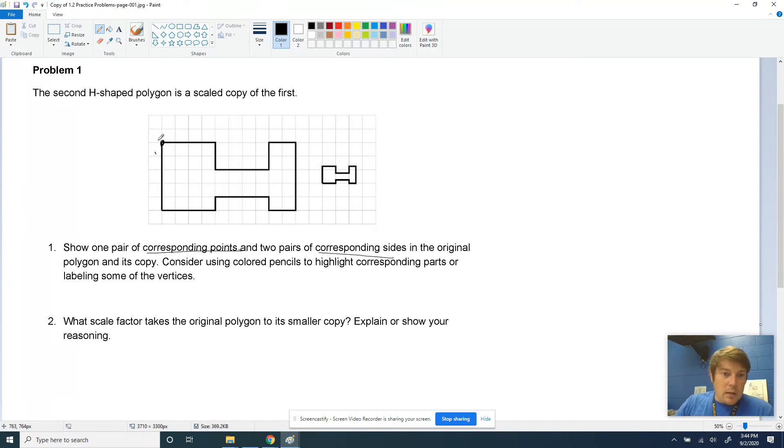So I'm going to call this point A. And over here on the smaller H, I'm going to say that this point over here, and I'm going to call it letter X, those correspond. And we're going to say that A corresponds with X. And then let's pick another pair of points. Let's go over here at the bottom left. I'm going to call that B, and I'm going to call that Y. And so B is in the same location as Y. Therefore, they correspond as points. So B corresponds with Y.